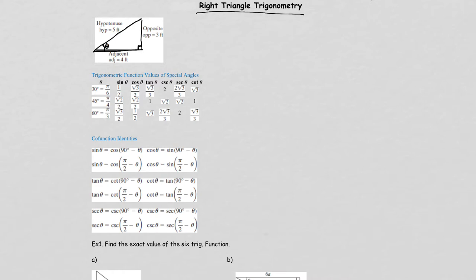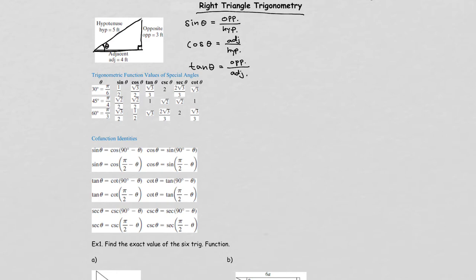Using these three sides, we should be able to find the value of sine, cosine, tangent, secant, and cotangent. Sine theta is opposite over hypotenuse. Cosine theta is adjacent over hypotenuse. Tangent is opposite over adjacent.